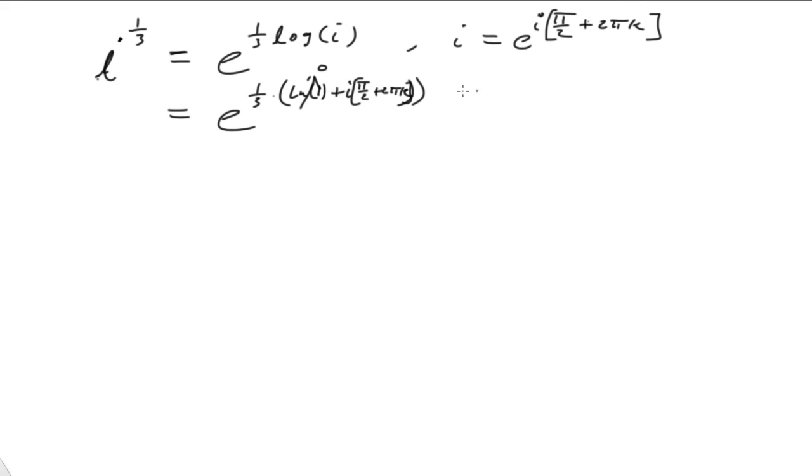And natural log of one is zero. So now we have e to the i pi over six plus 2 pi k over three. All right. So there gives us a nice result that we can use to get some idea of exponents here. All right.